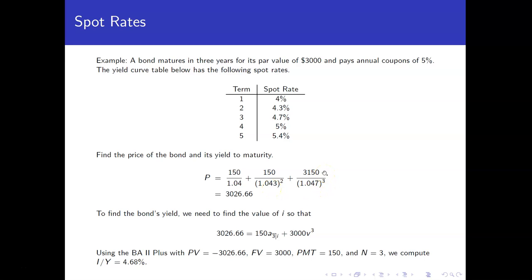For time 3, we've got not only the coupon of $150, but also the redemption value of $3,000, and we'll use the 4.7% spot rate to discount that cash flow, giving us a price of $3,026.66.